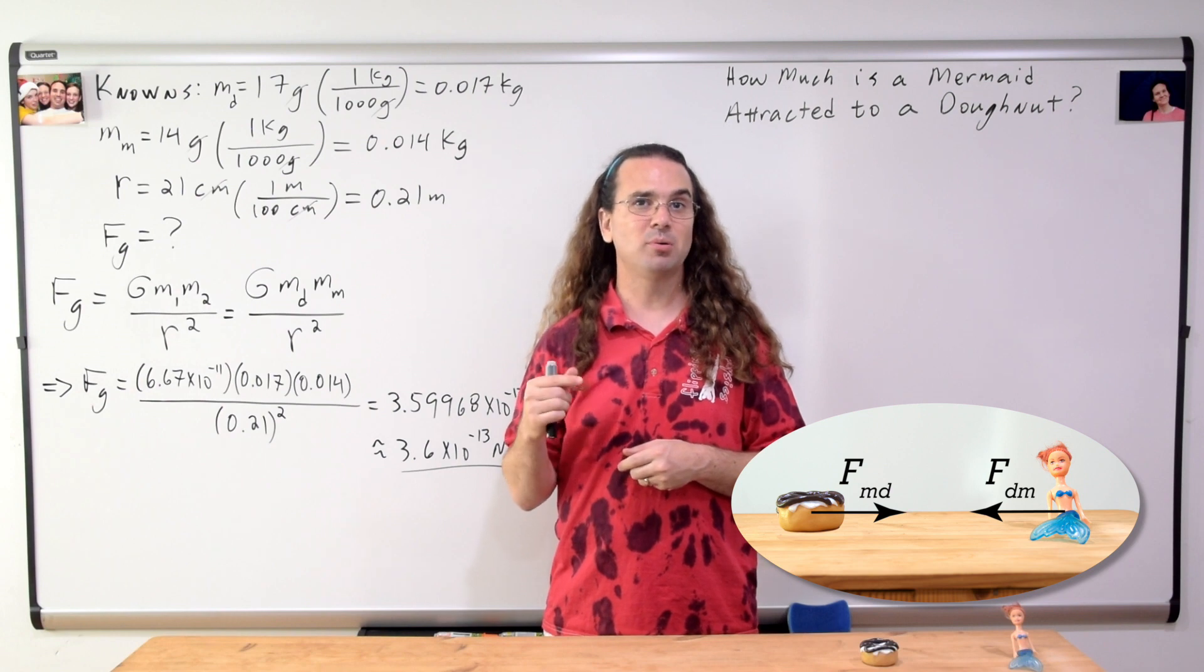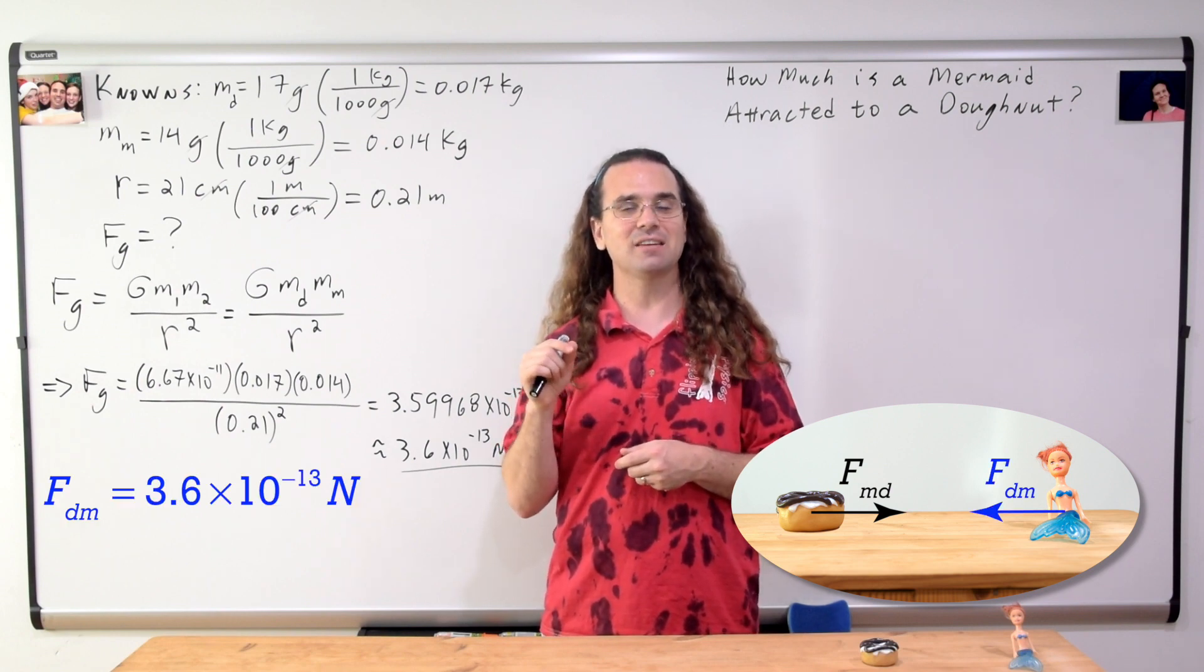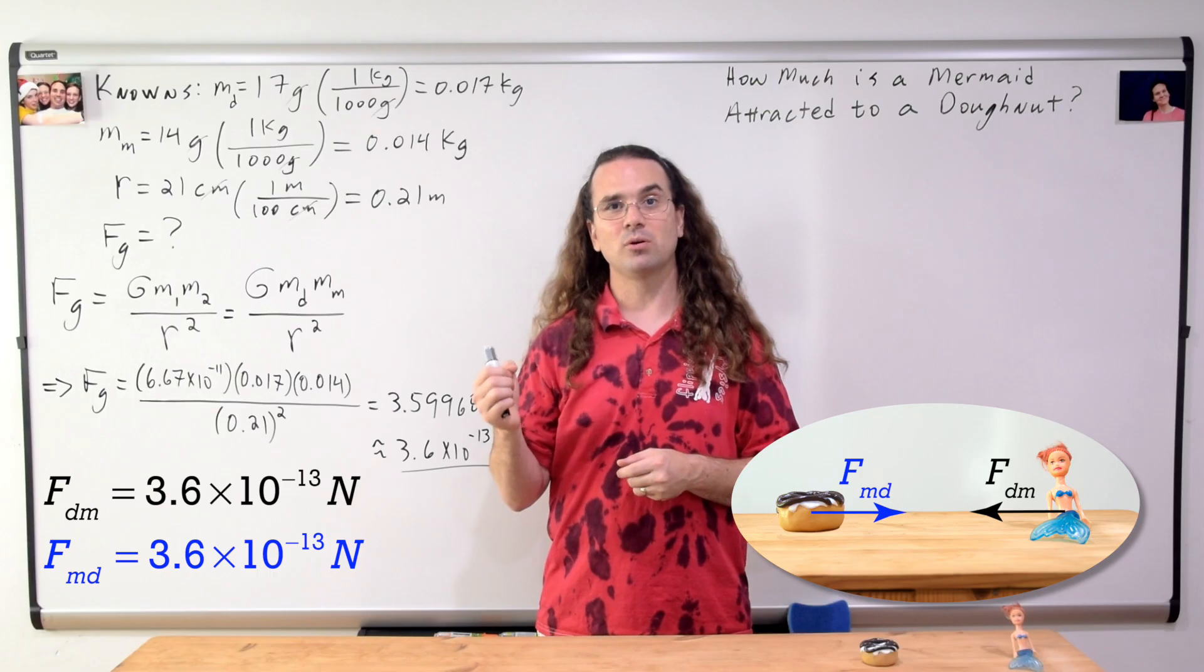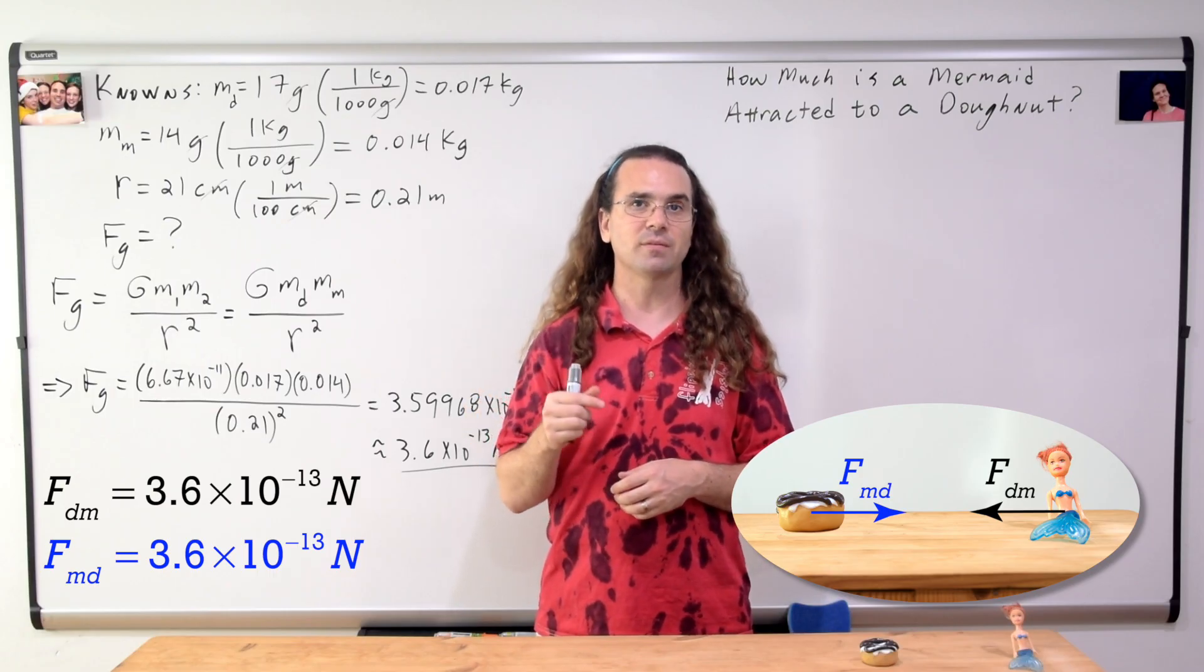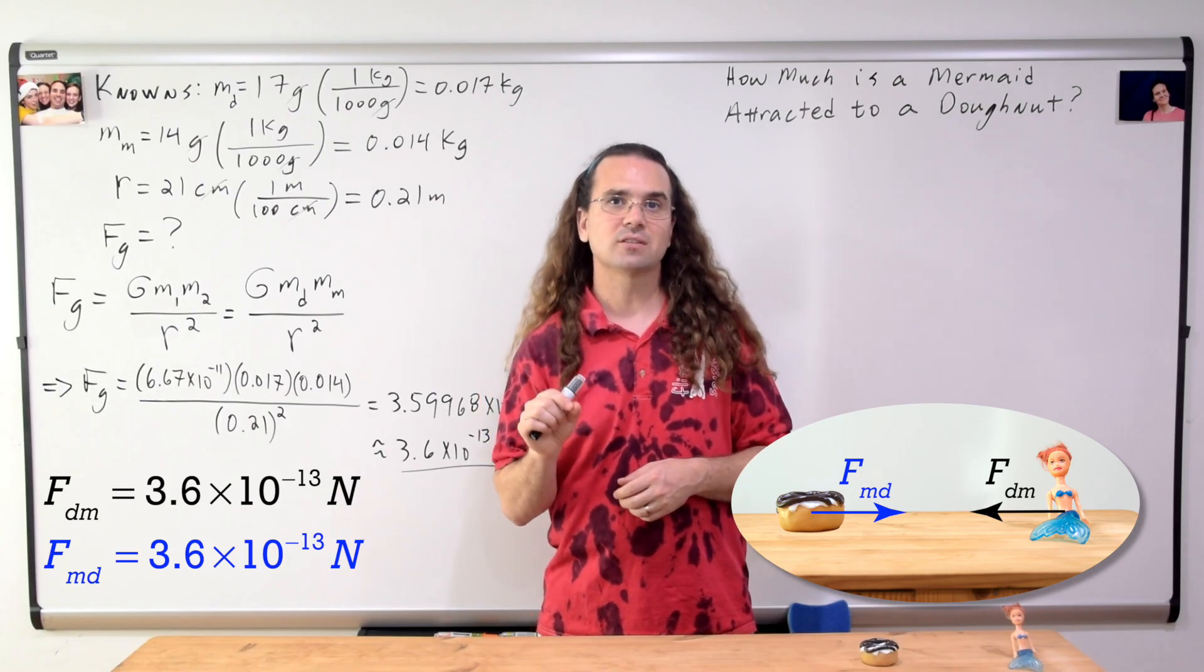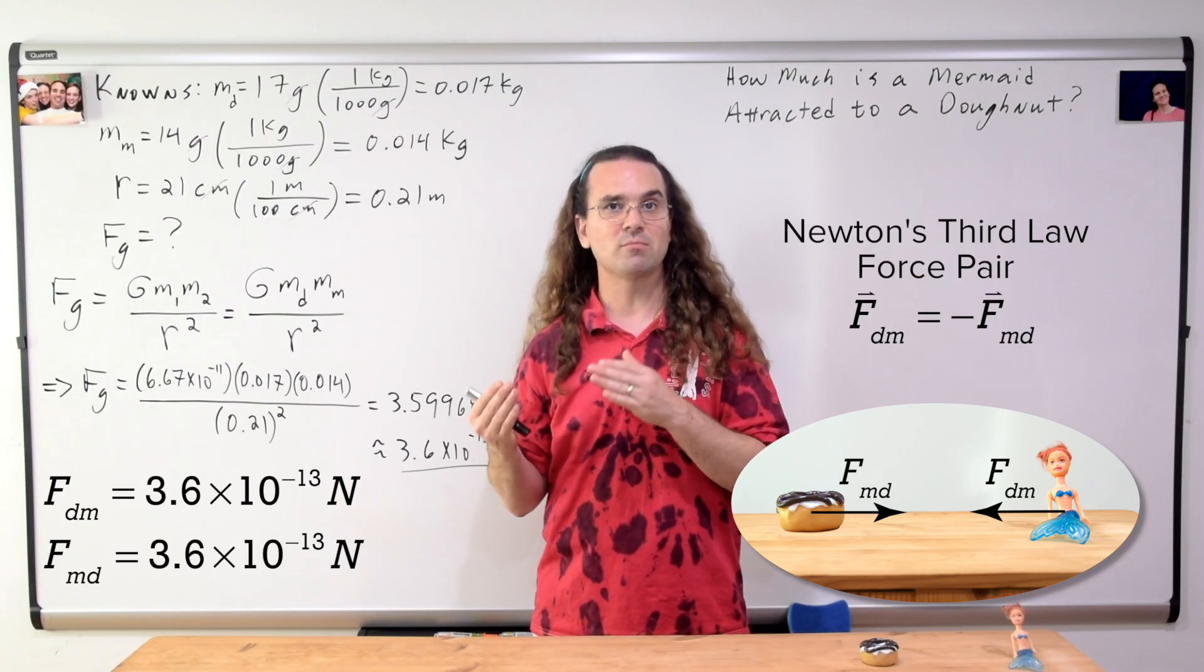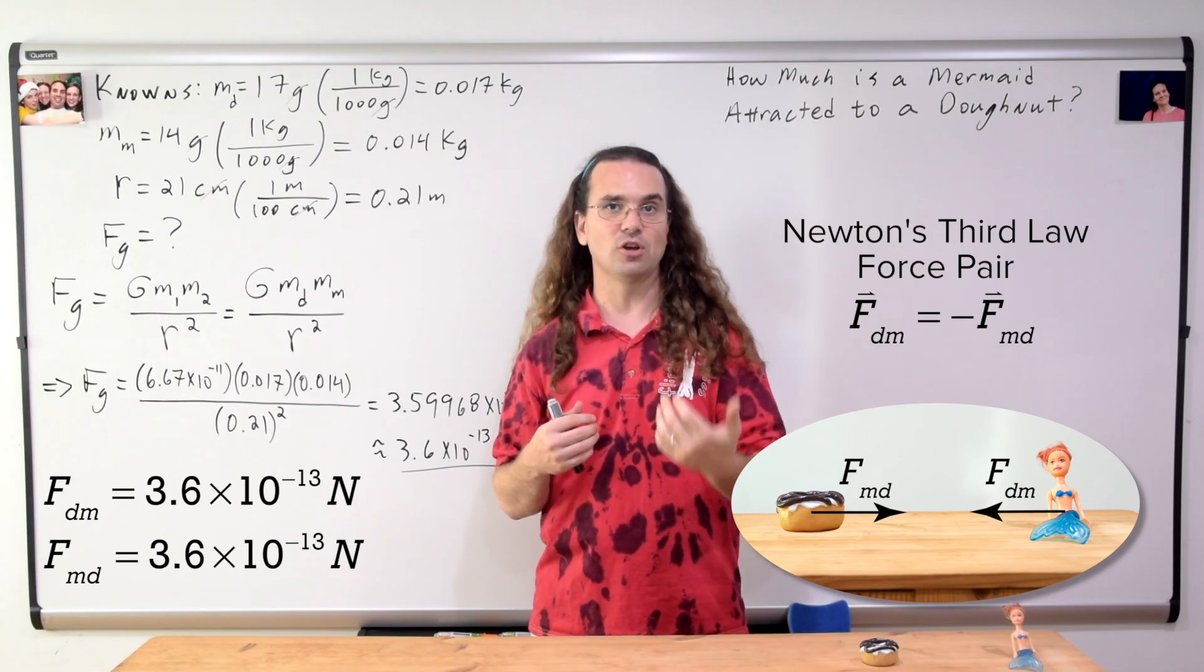So, right now, the mermaid is being pulled toward the donut with a force of 3.6 times 10 to the negative 13 Newtons. This is the force from the donut on the mermaid. And the donut is being pulled toward the mermaid with a force of equal magnitude and opposite direction. This is the force from the mermaid on the donut. Notice, these two forces form a Newton's Third Law force pair. For every force the donut applies on the mermaid, the mermaid applies an equal but opposite force on the donut.